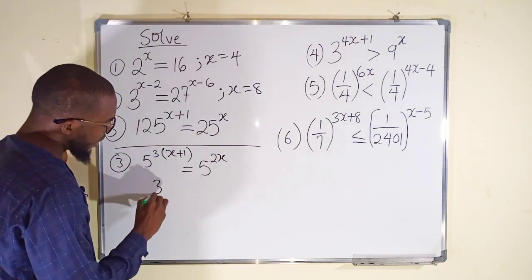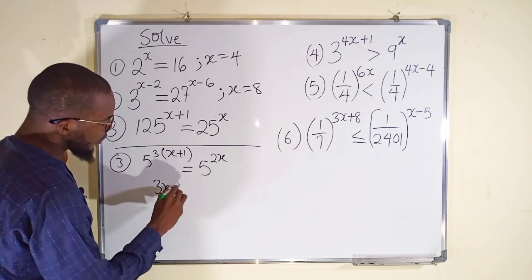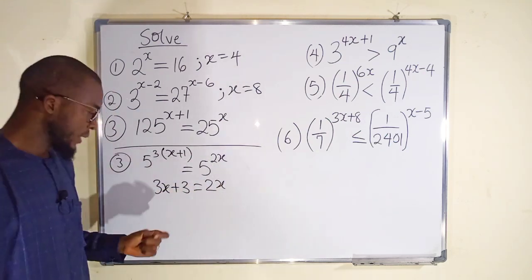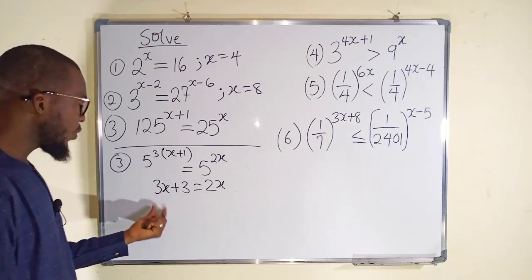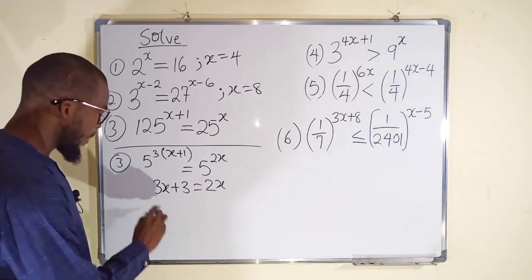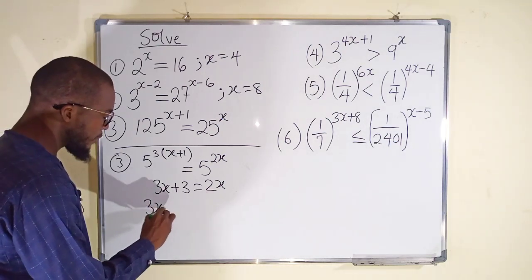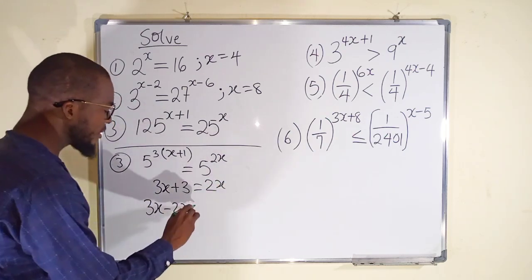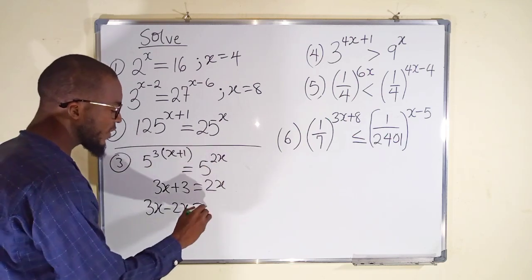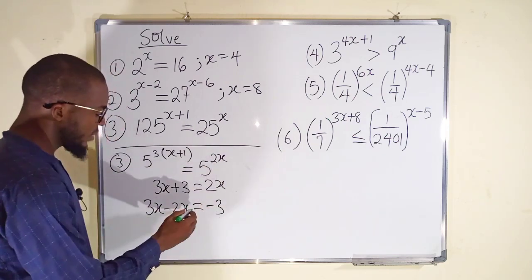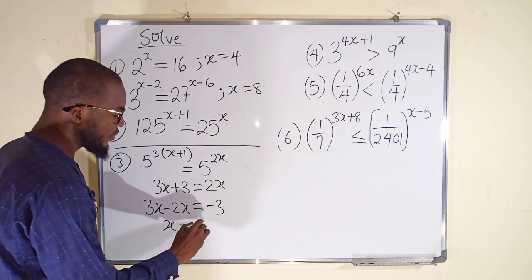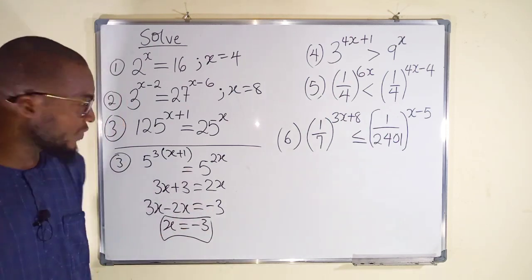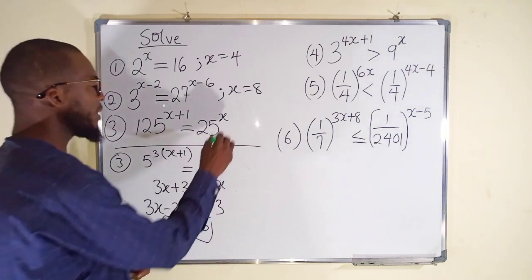3 multiplied by x is 3x, and 3 multiplied by 1 is 3. To the right we have 2x. Bringing terms across: 3x minus 2x on the left, and 3 becomes negative 3 on the right. 3x minus 2x is just x, and x is equal to negative 3. So x equals negative 3 in this last equation.